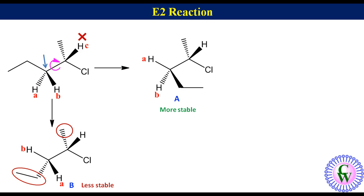Thus, the E2 reaction will most likely occur through conformation A, and HA is most likely to be eliminated.